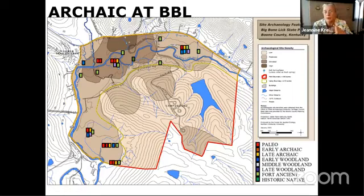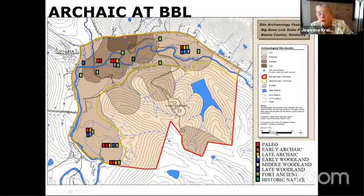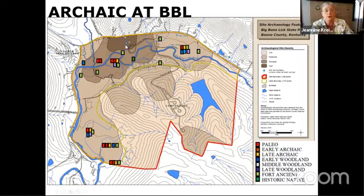We don't have a lot of Middle Archaic around here — most people think we had some climate issues and groups went down to the Green River in Kentucky, where there's a lot of Middle Archaic material. The orangey-brown color on the map is Early Archaic, and yellowish is Late Archaic. We have Early and Late Archaic pretty much throughout the park. It's a long time period — about 8,000 years — and it is spread throughout the park.